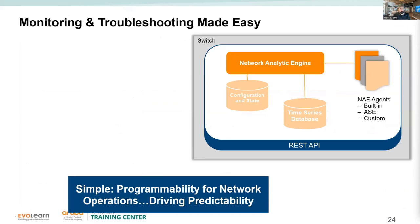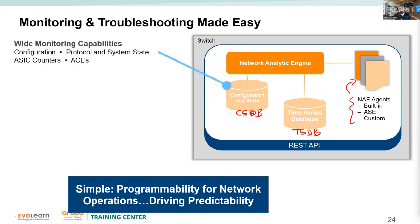The CX switch architecture is extremely modular and database-driven. We have a configuration state database and a time series database. An analytics engine runs agents. There is a REST API that integrates with external systems — for example, NetEdit uses the REST API to read from or make changes to the switch. Understanding this becomes clear when we reach the NetEdit module.